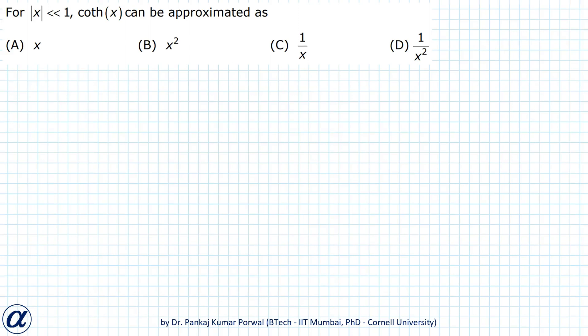In this question, we are given that mod x is very very less than 1, that is x is very small. Then cot hyperbolic x can be approximated using Taylor series expansion.